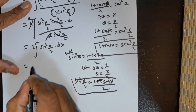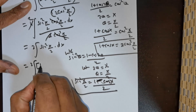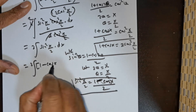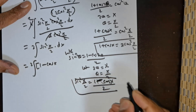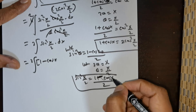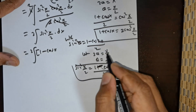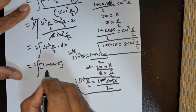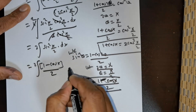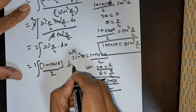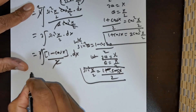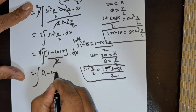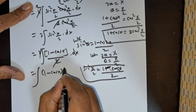Substituting that, it becomes 2·∫ (1 - cos(x))/2 dx. The 2s cancel, giving ∫ (1 - cos(x)) dx.